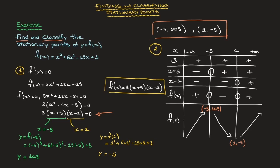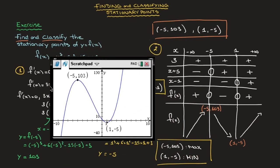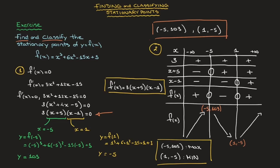We can now state our final answer: the stationary point (−5, 103) is a maximum, and the stationary point (1, −5) is a minimum. If we plot f(x) on a graphical calculator, we can confirm these results — the curve increases to a maximum at (−5, 103), then decreases to a minimum at (1, −5), and shoots back upwards. That's how we find and classify stationary points using the first derivative.